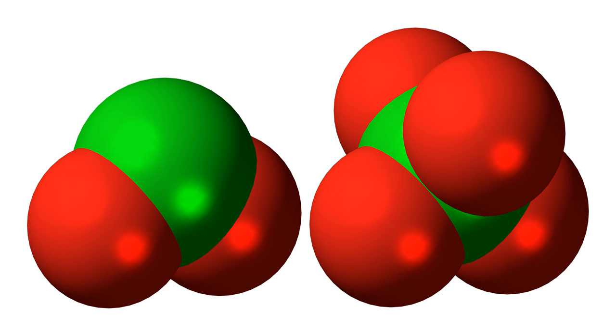It is a dark red fuming liquid at room temperature that crystallizes as a red ionic compound, chloryl perchlorate, ClO2+ ClO4-.